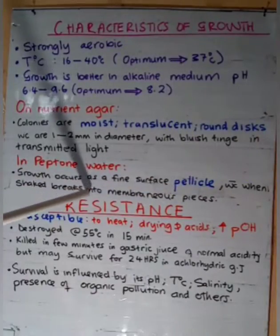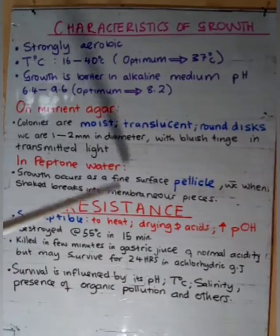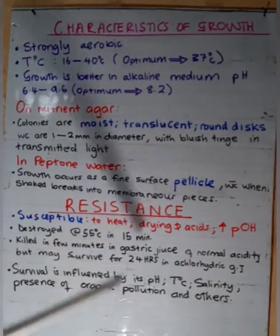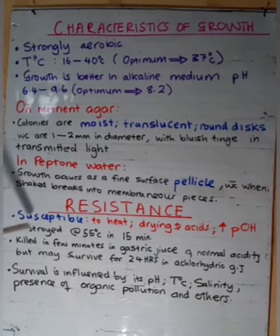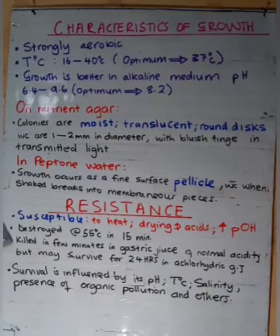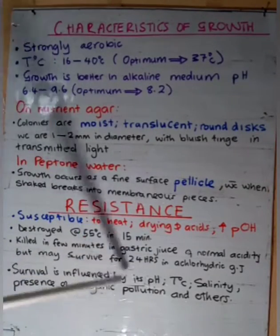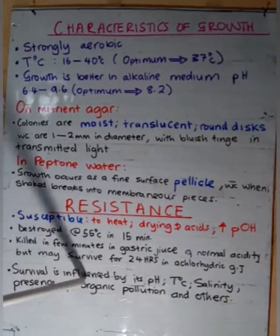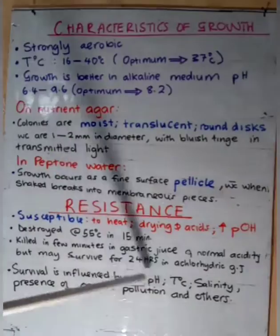The pellicle, when shaken, breaks into membranous pieces. On resistance: these vibrios are susceptible to heat, drying, and acids, and also to high alkaline conditions. They are destroyed at 55°C in 15 minutes, and killed within a few minutes in gastric juice of normal acidity. However, they may survive for 24 hours in achlorhydric gastric juice. Their survival is influenced by pH, temperature, salinity, and the presence of organic pollution.